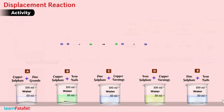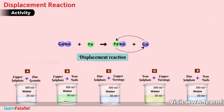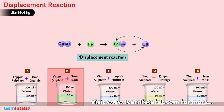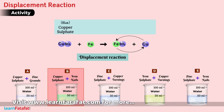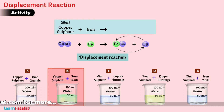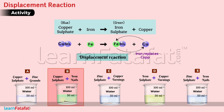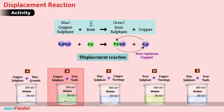In a similar manner, the reaction taking place in beaker B can be given as: copper sulphate reacts with iron and produces iron sulphate and copper. Here also, iron replaces copper, indicating that iron is more reactive than copper.